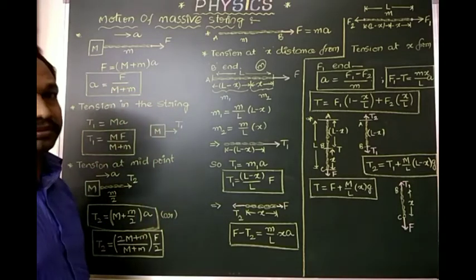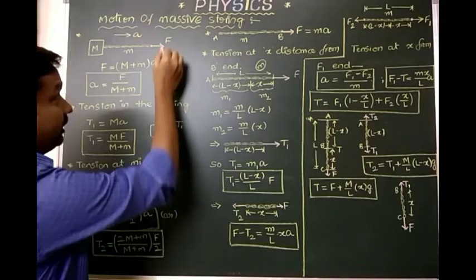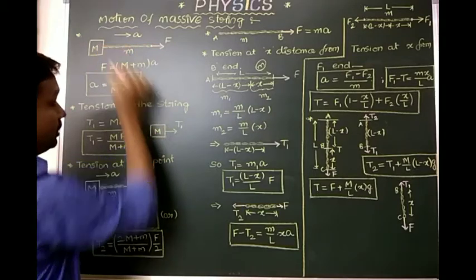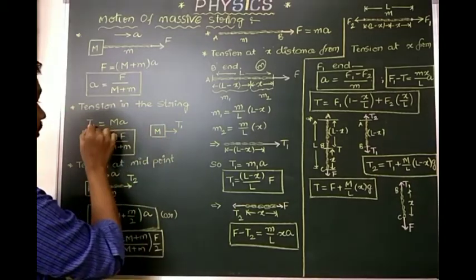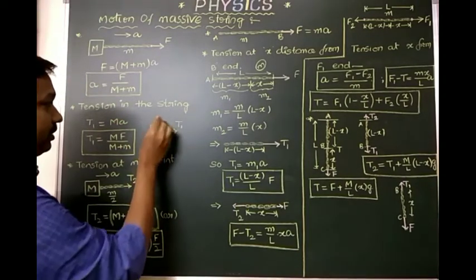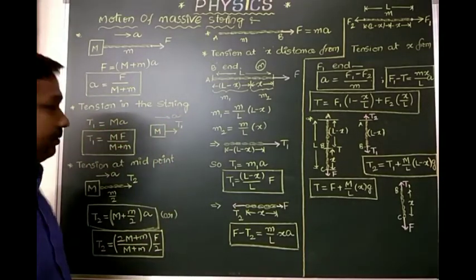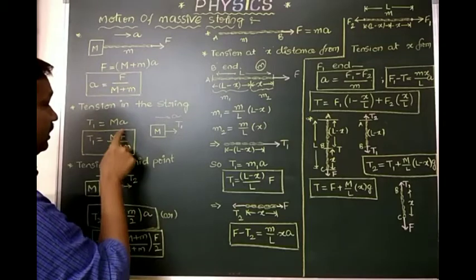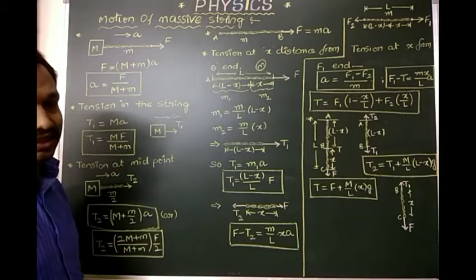Now, what is the tension in the string? Here we apply a force, and the tension T1 is the force the string exerts on the block. Tension equals mass times acceleration. For the block: T1 = M × a. Substituting the acceleration formula, tension T1 equals M times F divided by the total mass of the system, (M + m).